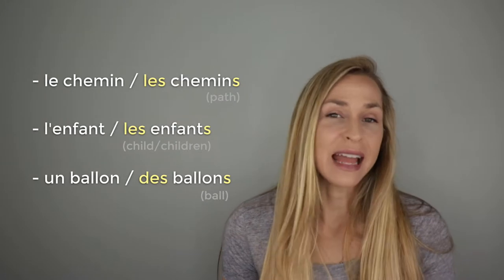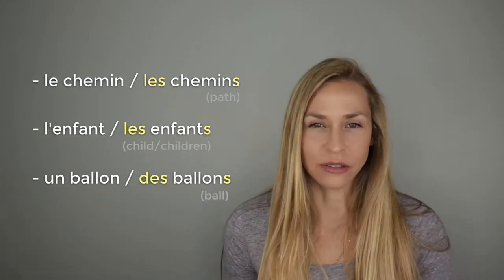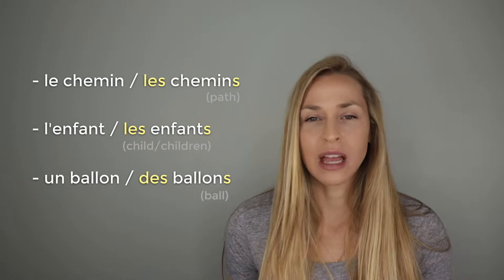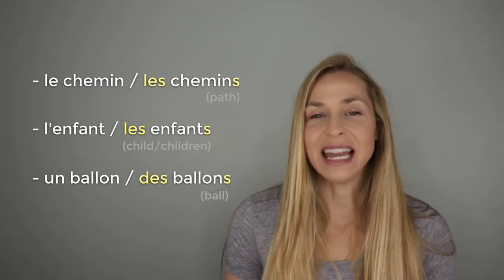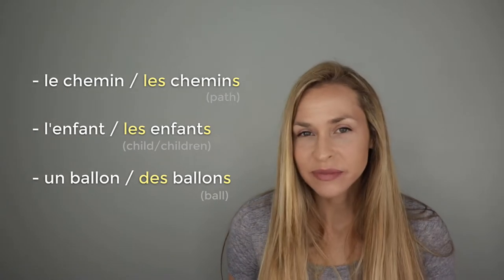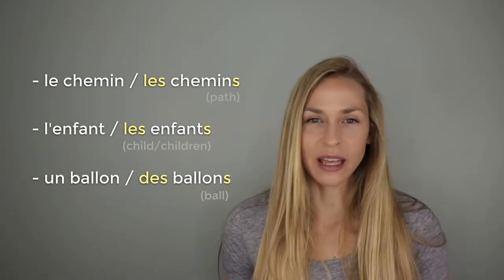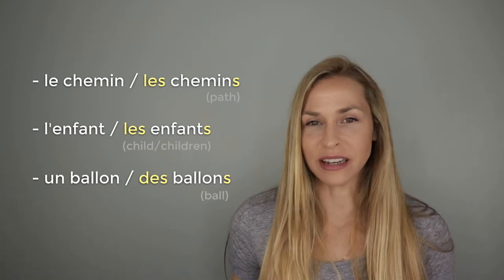The most basic and most common way to form the plural of nouns in French is to simply add an S. Let me give you a few examples: le chemin, les chemins — we simply added an S at the end. L'enfant, les enfants — just an S again. Un ballon, des ballons — we simply added an S again.